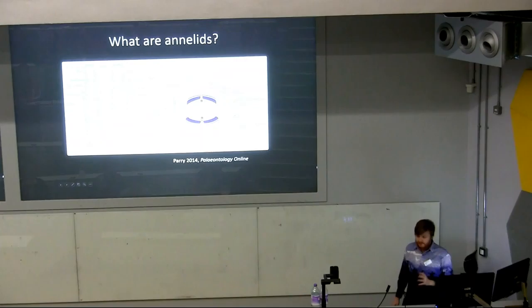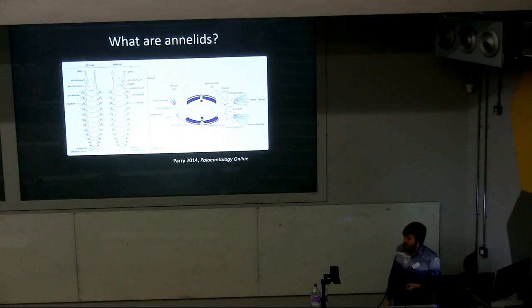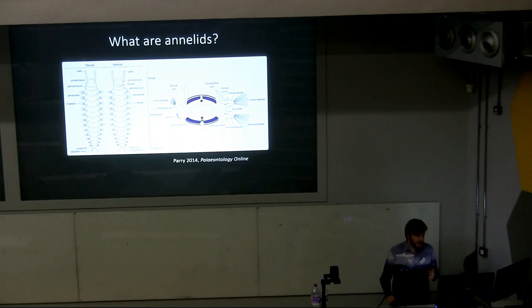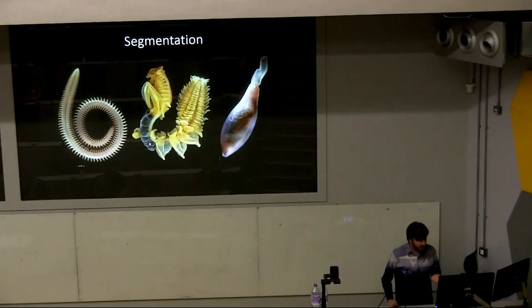Annelids have a segmented body plan — a highly plastic body plan consisting of a pre-segmental region that forms the head, which typically in polychaetes has a pair of appendages, and then a trunk consisting of many repeated segments. These segments can bear different types of appendages performing different functions: gills, chaetae involved in locomotion or protection, hooked chaetae that anchor them inside dwelling tubes, sensory appendages like dorsal and ventral cirri, and in a particular clade, internalized chaetae that support the parapodia and aid in locomotion.